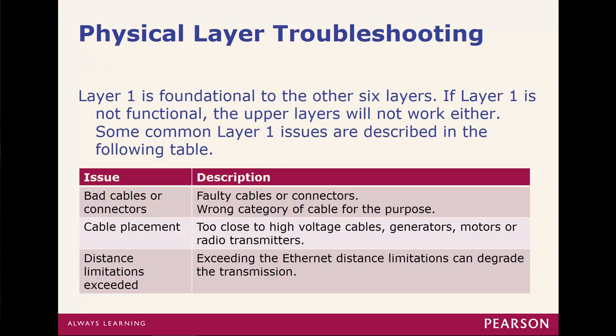Let's look at physical layer troubleshooting. It could be as simple as a bad cable or a connector going out. Maybe the cable was put in the wrong area, or when it was run it was run really close to other high-voltage cables — or they put in a generator where the cable was, and the cable ended up laying on top of the generator. Sadly, that's very common. Distance is always a concern as well.